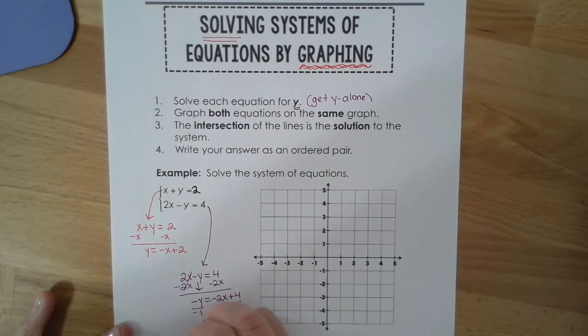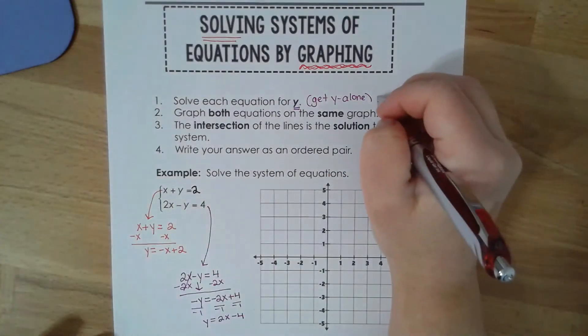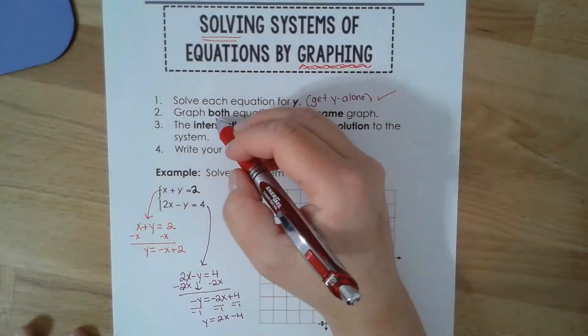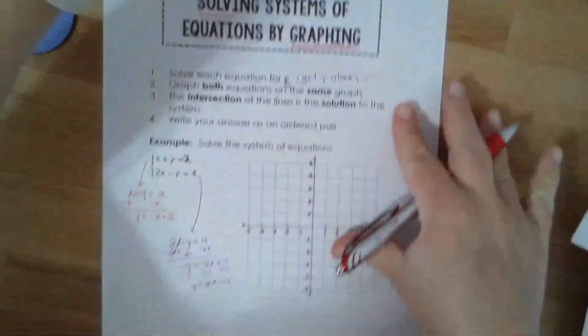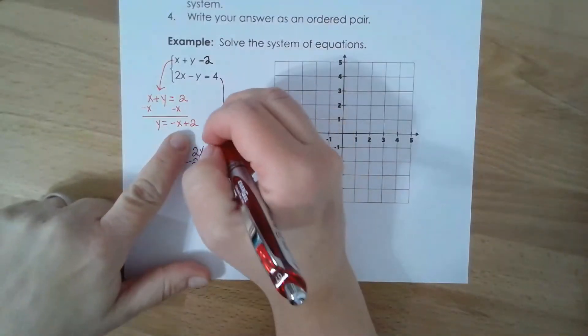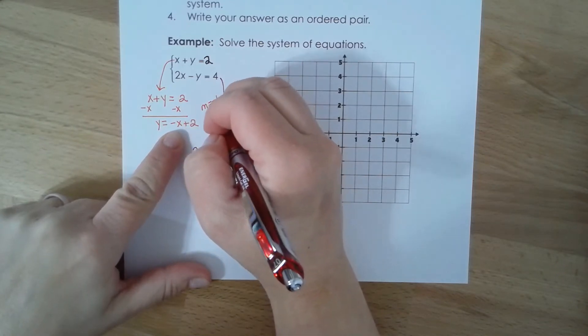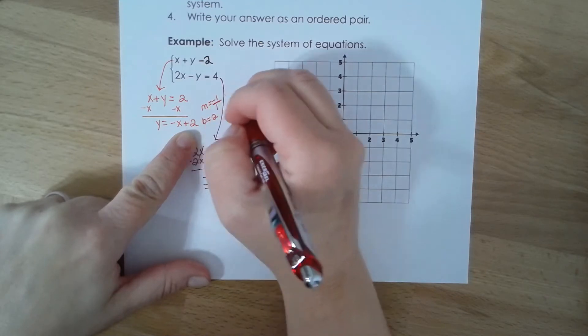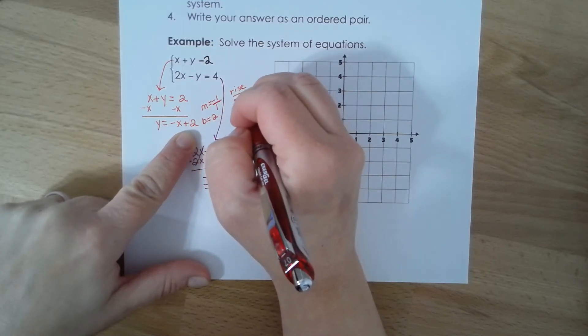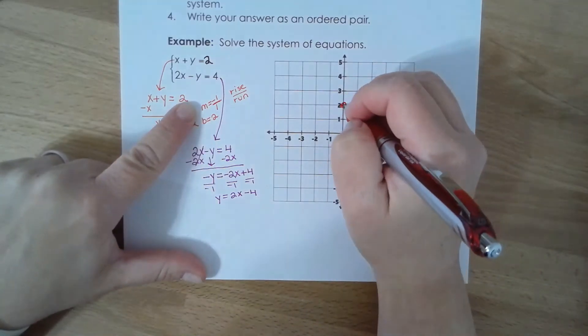Okay, so step number one is done. Step number two says graph both equations on the same graph. So remember how yesterday we practiced writing what the slope is? Negative one over one, and b is two. Always have a rise over a run.